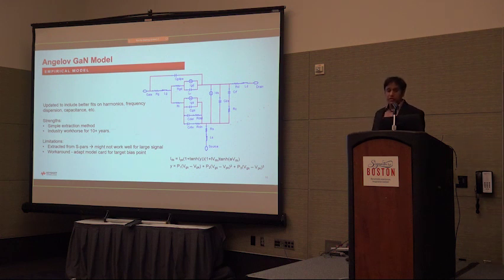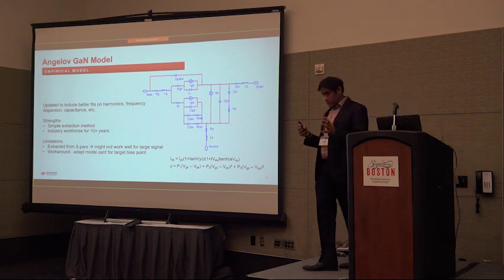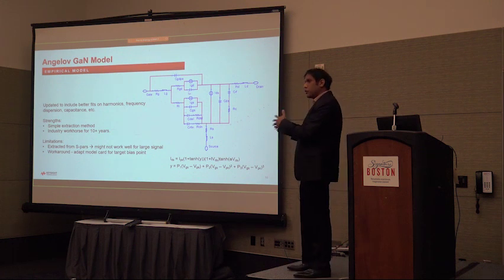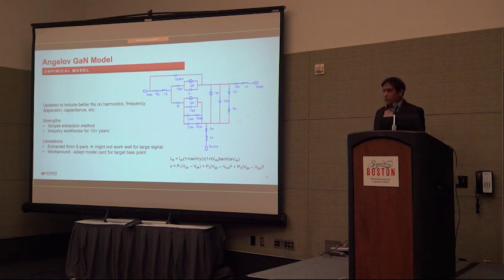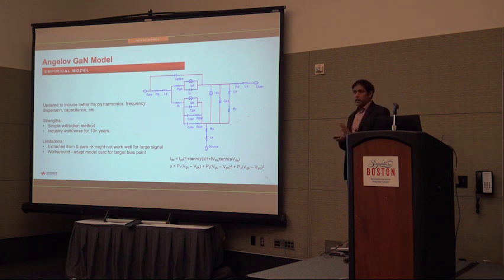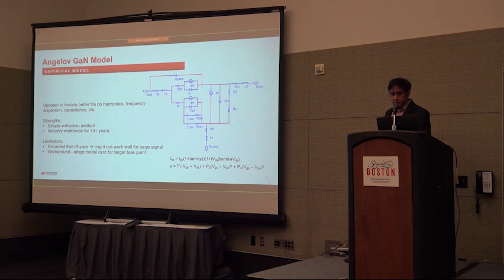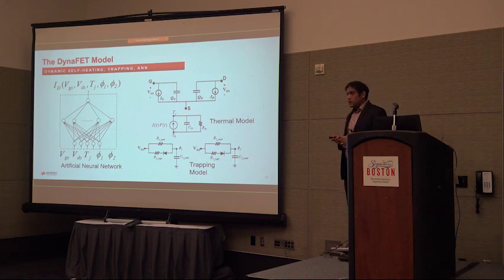The Angelov model has been updated to include better gate diode current and trapping models. However, being derived from small-signal parameters, you can sometimes get two sets of model parameters that show the same characteristics. One common workaround for its limitations in large-signal predictive capability is to adapt the model for a targeted bias point, but going forward we'll require models that are agnostic to the choice of bias point.